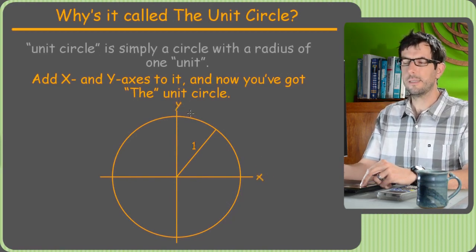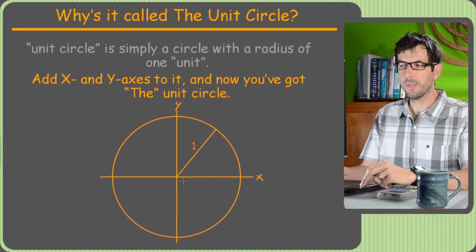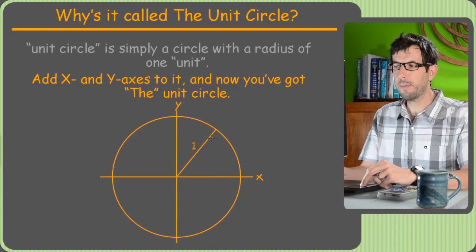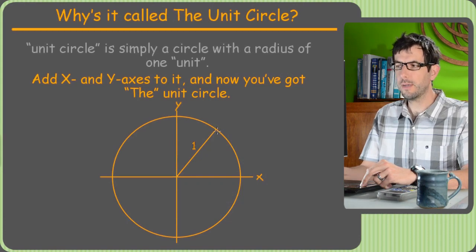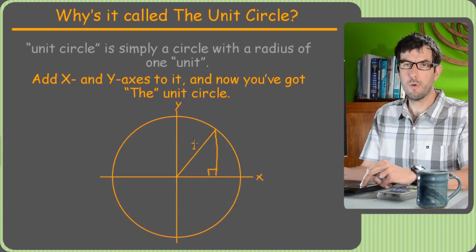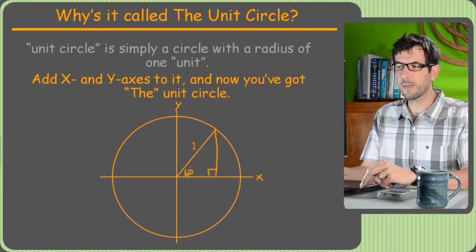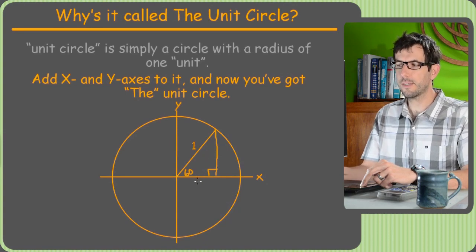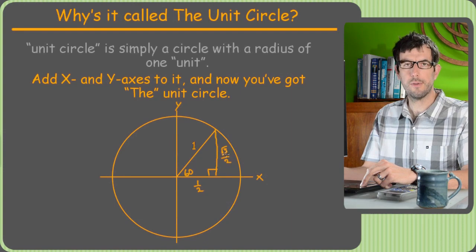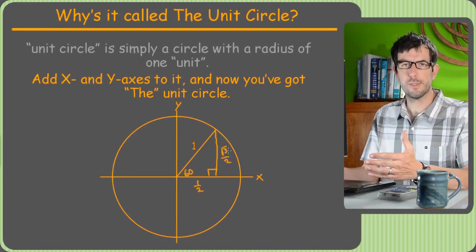This is x, this is y, and the unit circle is centered at the origin with a radius of 1 unit. What's really great about this is that you can make a right triangle, and that right triangle is going to have a hypotenuse of 1. So if this angle happened to be 60 degrees and it has a hypotenuse of 1, that's our 30-60-90, so we could just drop in the fraction version of that special triangle, and we're finding the sine and cosine of angles.